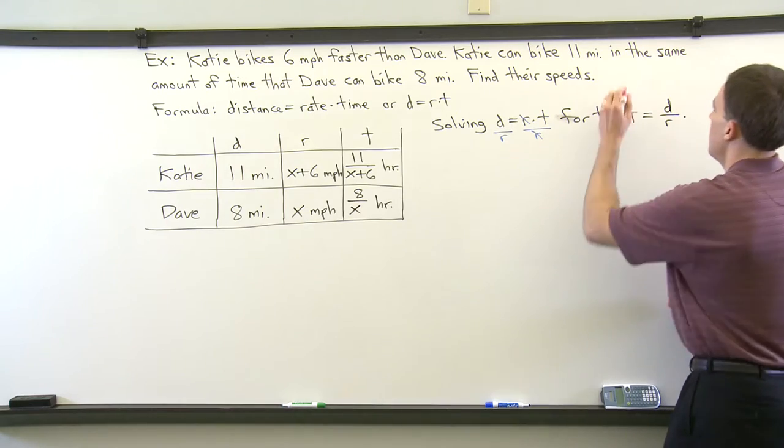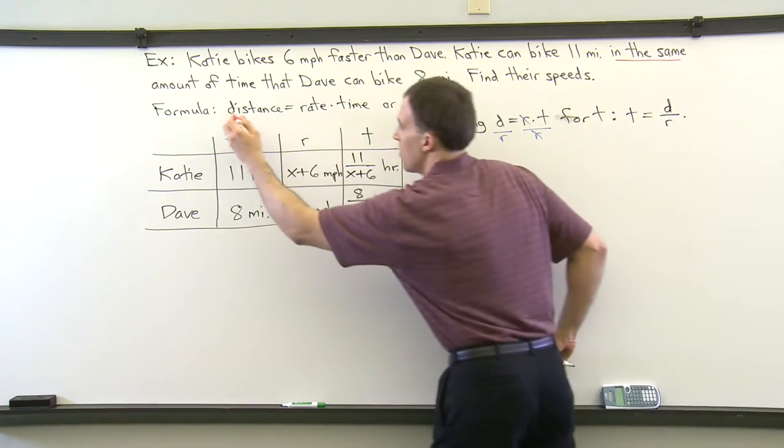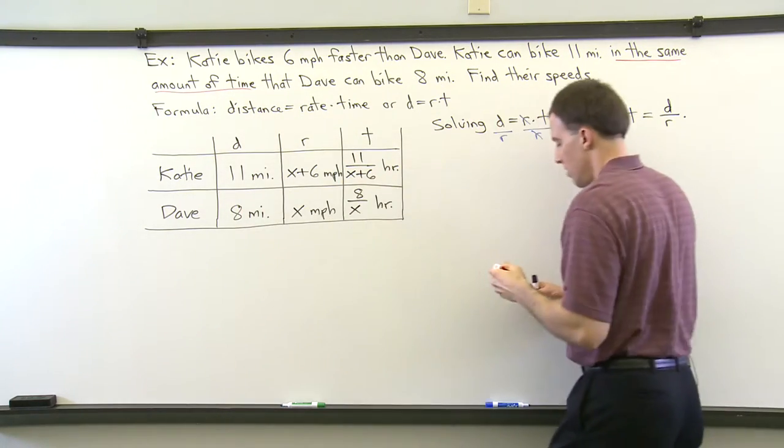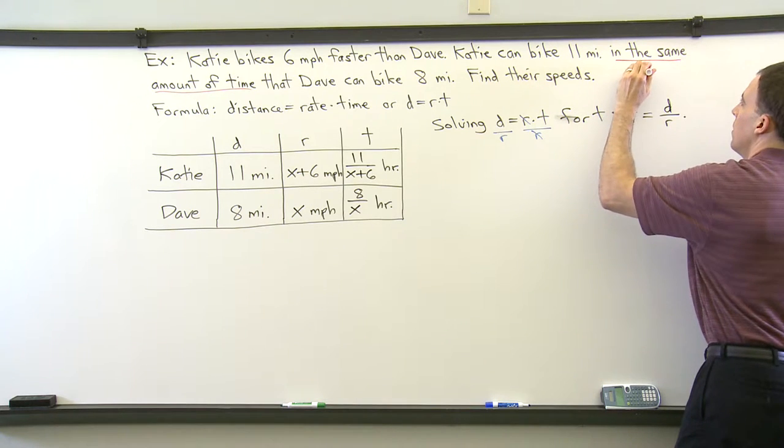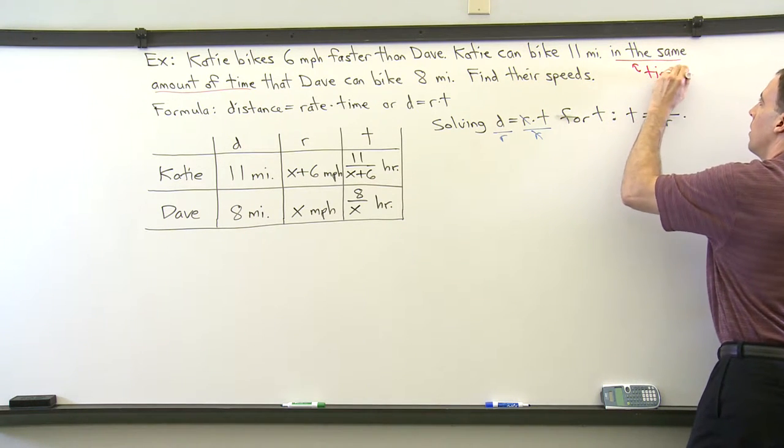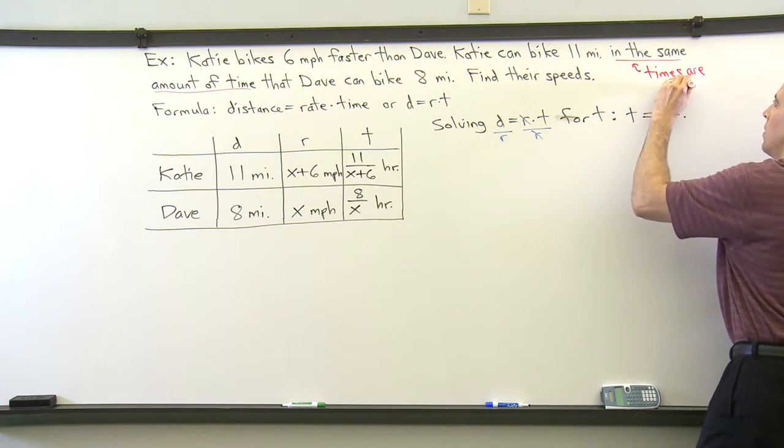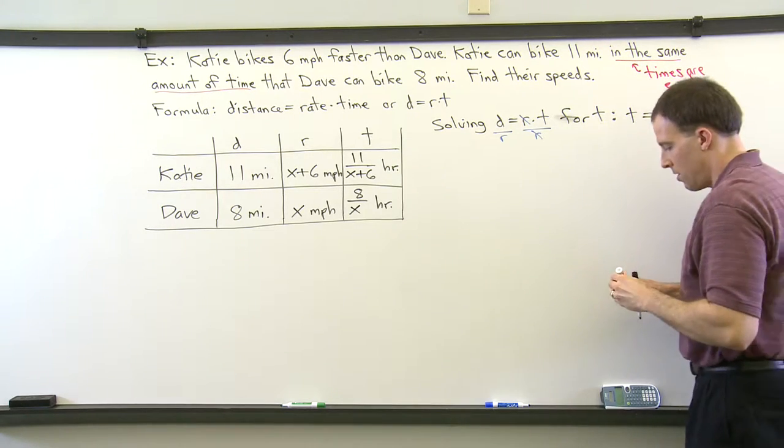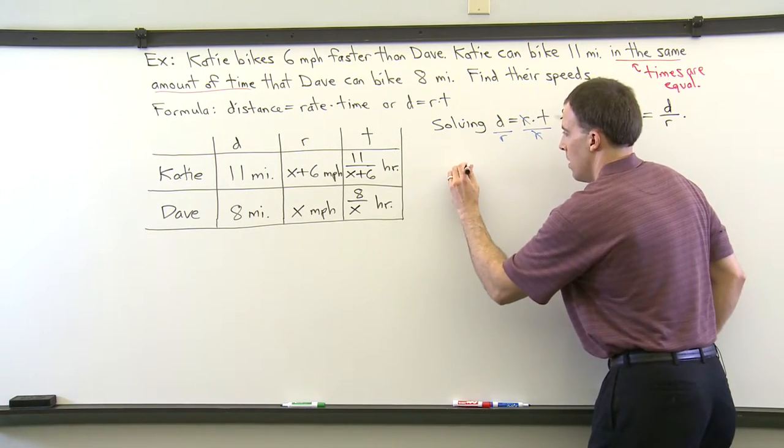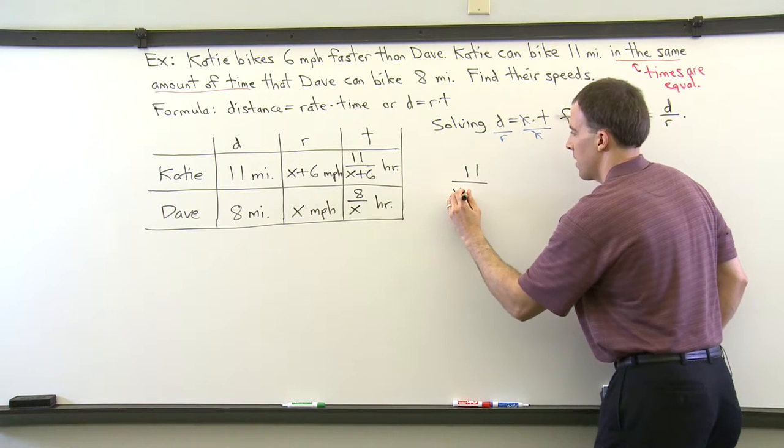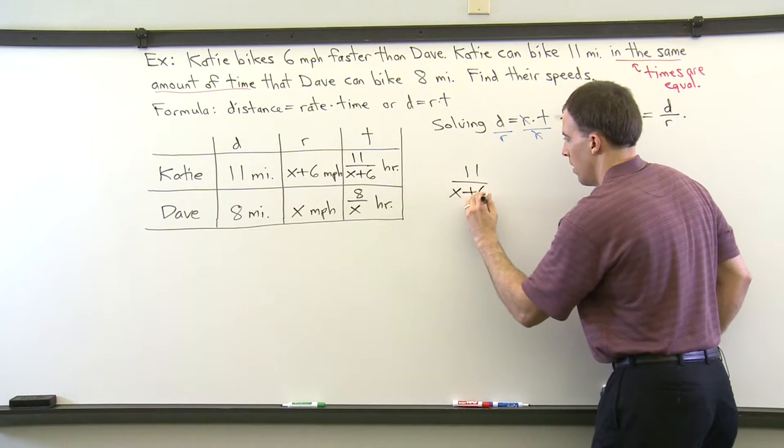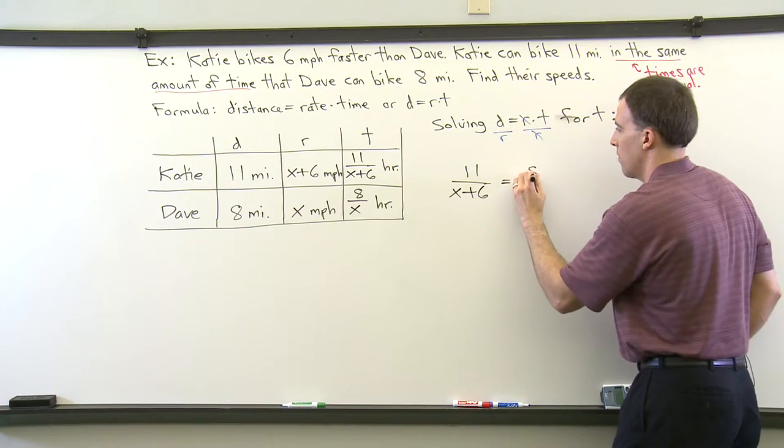We've now got an expression for both of their times. And since the problem says in the same time they can travel each of those distances, that means the times are equal. So there's our equation. Just take the first time, 11 over X plus 6, and set it equal to the second time, which is 8 over X.